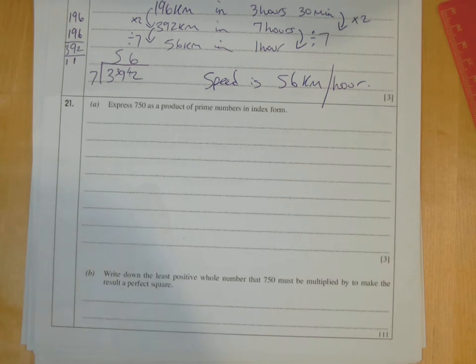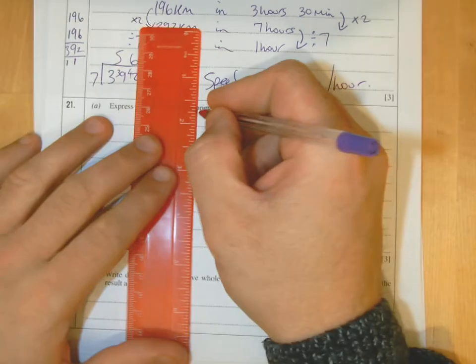Okay, so in this question here, express 750 as a product of prime numbers in index form. There's two ways of doing this. Perhaps I'll show you both ways. There's the ladder method and there's the tree method.